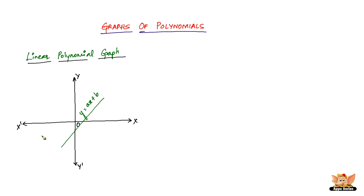This line can appear anywhere on the graph sheet — it doesn't have to be in any particular position. What we're focusing on in this video is the shape of the different kinds of polynomials.